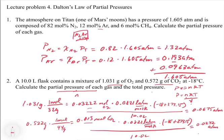Let's do a quick check. This makes sense because we have more moles of O2 than CO2, so we should have more pressure from O2 than from CO2, and that checks out. To get the total pressure, we add the individual pressures together. The total pressure is 0.0675 plus 0.0272, which equals 0.0947 ATM.